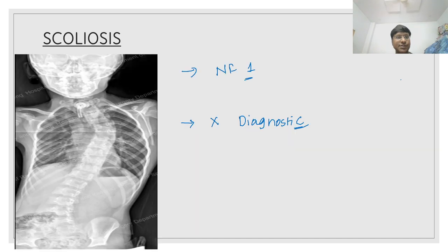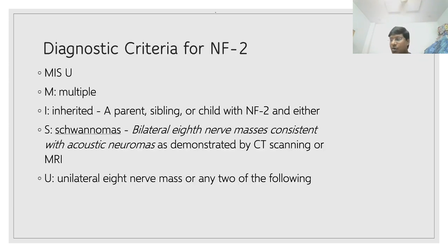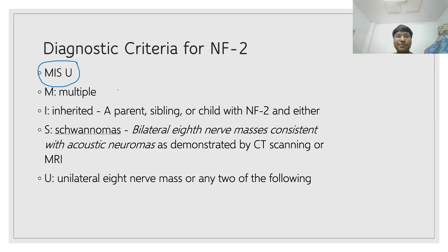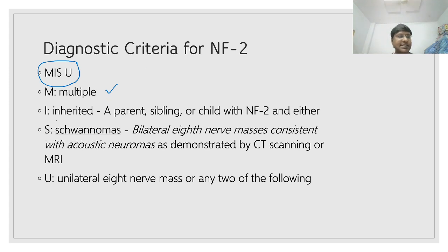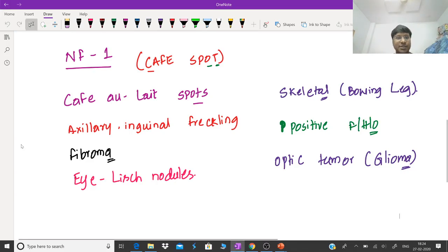Now we move on to type 2 neurofibromatosis. The mnemonic for type 2 neurofibromatosis is MISS U. M stands for multiple manifestations; I stands for inherited condition — autosomal dominant type of inheritance; and S stands for schwannoma. Let me discuss the schwannoma in detail.